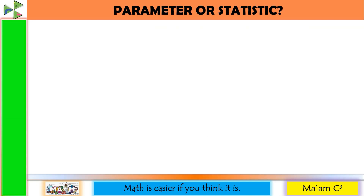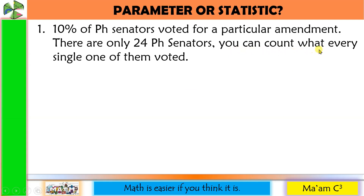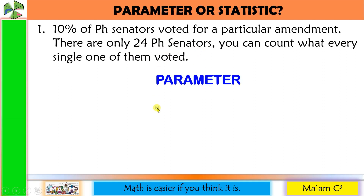Let's have another activity — parameter or statistic? Number one: 10% of Philippine Senators voted for a particular amendment. There are only 24 Philippine Senators, so you can count what every single one of them voted. Since you can determine the data for the whole population, your population here is 24 Philippine Senators. Since you can gather data for the whole population, then this is a parameter.